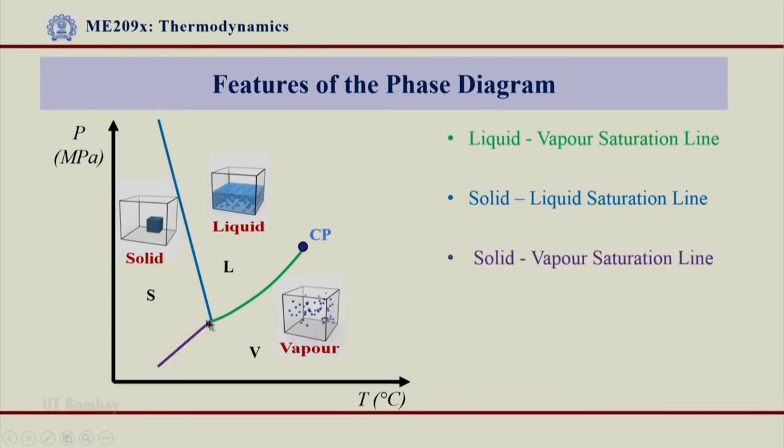And the third line of this Y is this leg which is what we say as solid vapor saturation line. Again at lower pressures and lower temperatures, if we increase the temperature here we go straight away from solid to vapor region and this is SV line where solid and vapor stay together, they exist together, they are in equilibrium over here.